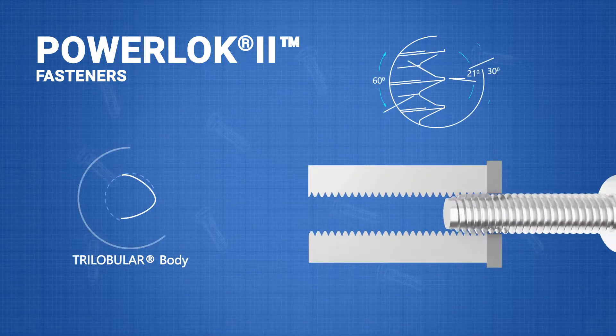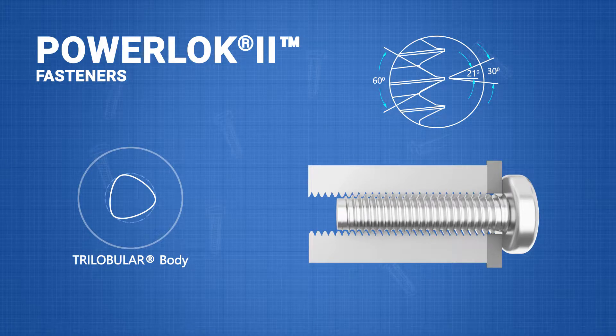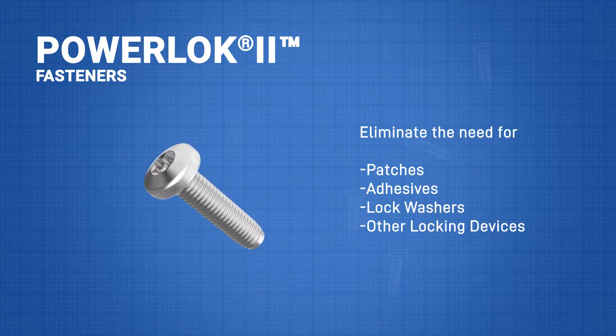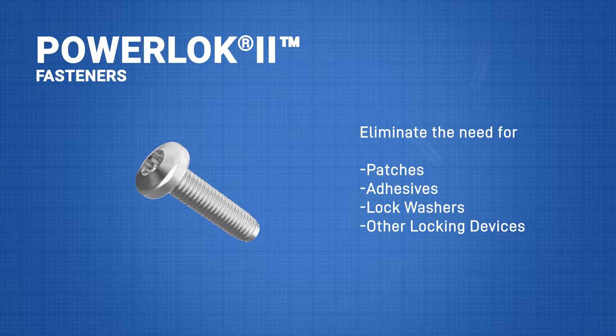The dual angle thread profile of PowerLock 2 Fasteners provides locking in a threaded nut, eliminating the need for patches, adhesives, lock washers, and other locking devices.